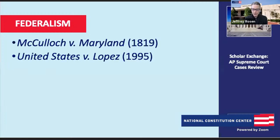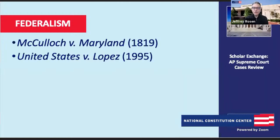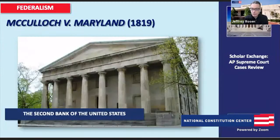You're going to do great on the exam. McCulloch v. Maryland in 1819 and Lopez in 1995 represent the expansive view of congressional power and then the limitations on that power. McCulloch and Maryland is the biggest debate at the constitutional convention — they want to create a Congress strong enough to achieve national ends like regulating the economy, but constrained enough that its powers aren't unlimited and don't threaten liberty.